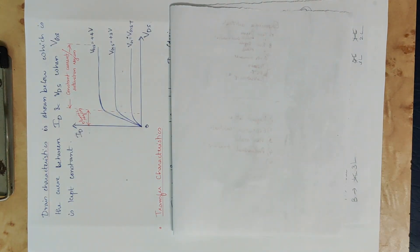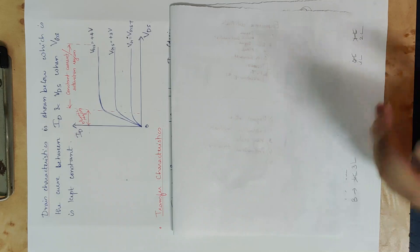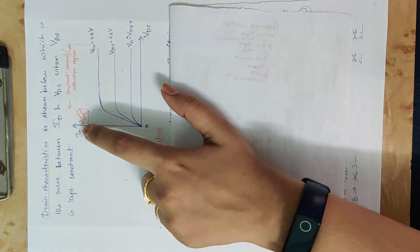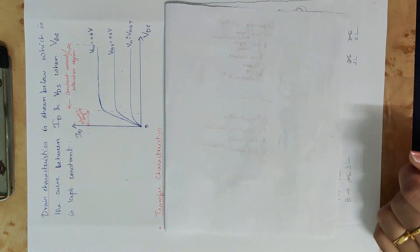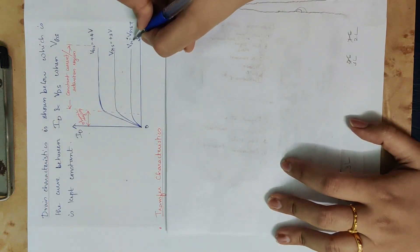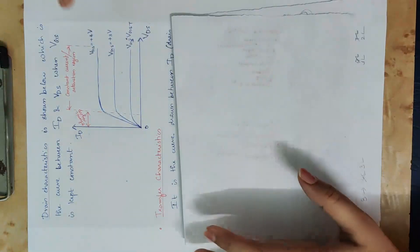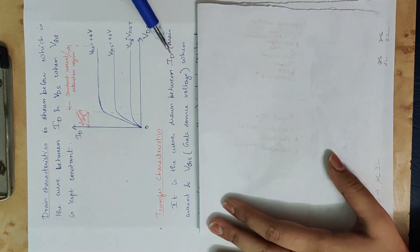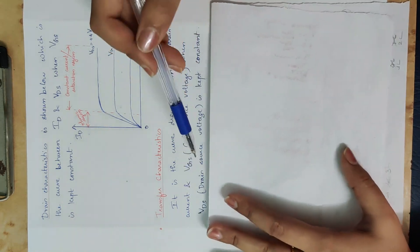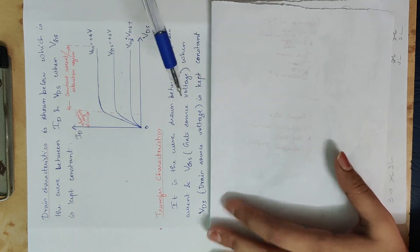Now, what are the transfer characteristics? Transfer means two different terminals. We have three quantities: ID, VDS, and VGS. Transfer characteristics is the curve drawn between ID, the drain current, and VGS, the gate-source voltage, when VDS, the drain-source voltage, is kept constant. This is the same definition we studied in JFET.